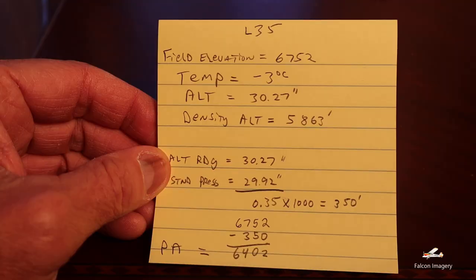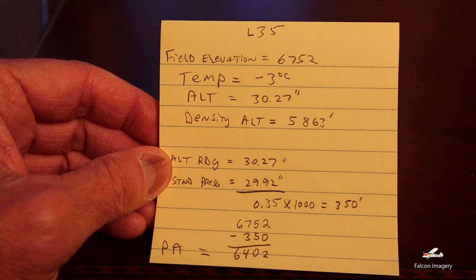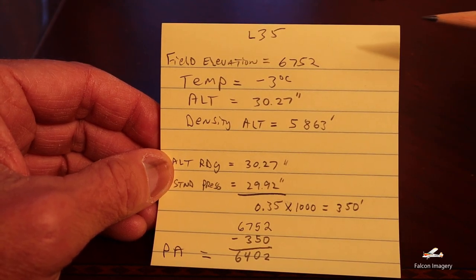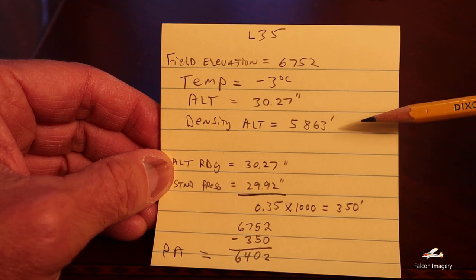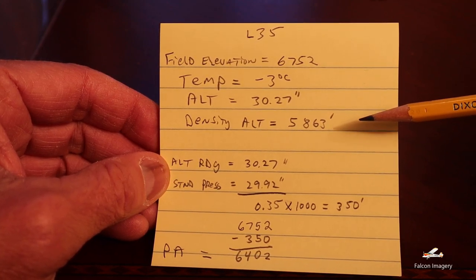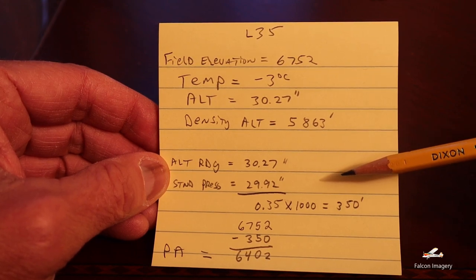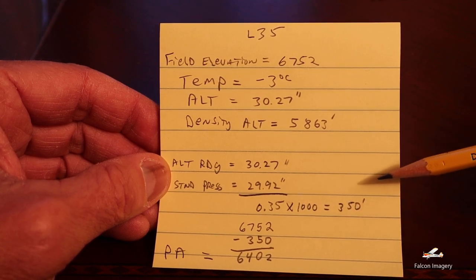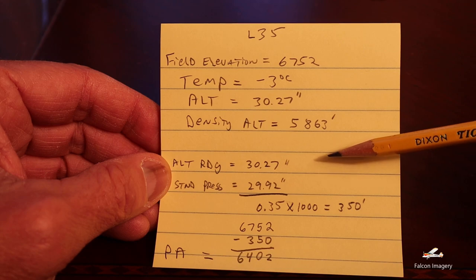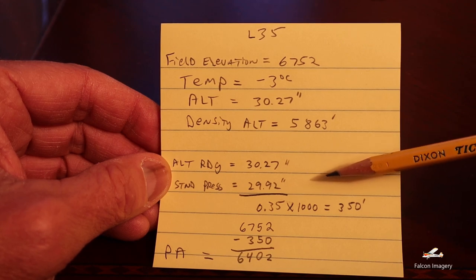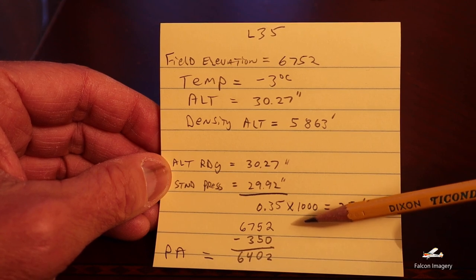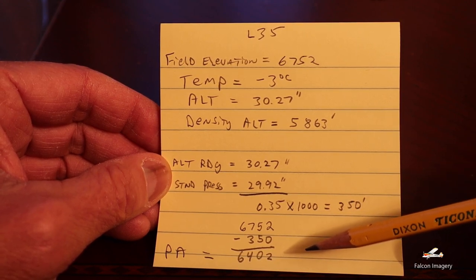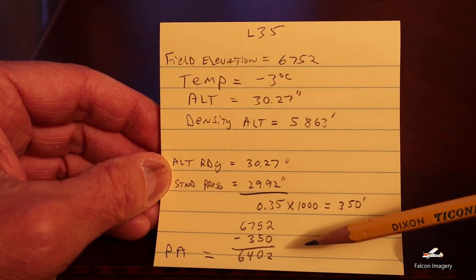Let's check that out with the math. We had a field elevation of 6,752 feet, temperature minus 3, altimeter reading of 30.27 inches, density altitude of 5,863 feet. Taking the difference between 30.27 and the standard pressure of 29.92 gives us 0.35, multiplied by a thousand gives 350 feet. Since the altimeter reading was higher than standard pressure, we subtract 350 from the field elevation: 6,752 minus 350 gives us a pressure altitude of 6,402 feet — which is indeed essentially what I saw using the E6B computer.